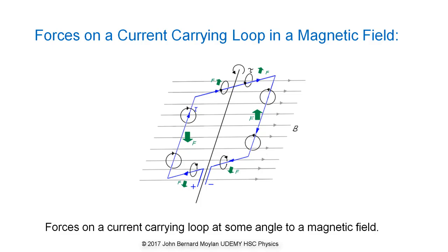The forces on the ends of the loop increase as the loop rotates towards being at right angles to the external magnetic field, but they make no contribution to the torque on the coil as they are parallel to the axis of rotation.